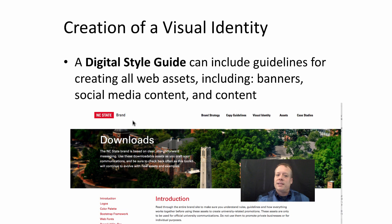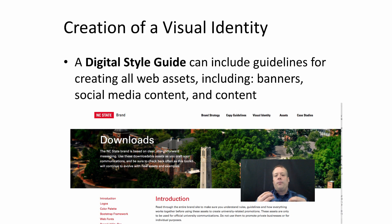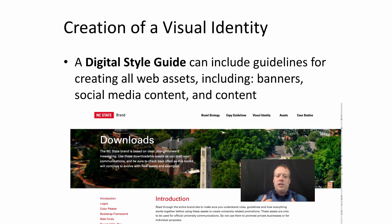I just Googled 'NCSU digital style guide' and one of the first things that came up was a page that talks about all the different brand rules and guidelines they have — examples of logos you can use, what exact color numbers to use, things like that. This helps create a consistent visual identity for the university such that the experience is similar and engaging no matter where you are on the university website.